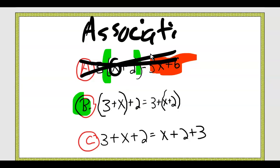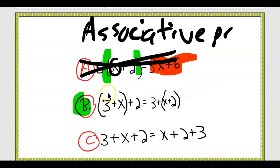Who do you associate with? Who are your friends, basically — who are you hanging out with? Can you change who you hang out with? That's associative property. It's similar to commutative property, but we're not changing the order — we're just changing the groupings.